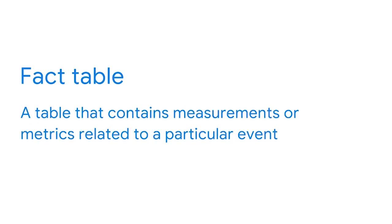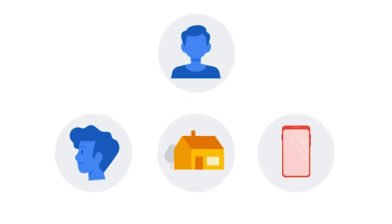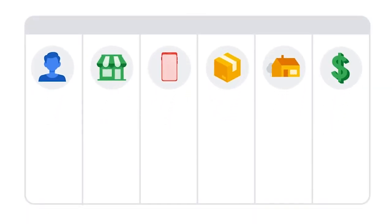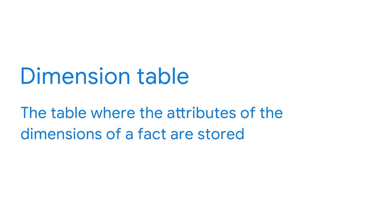The dimensional model uses facts, dimensions, and attributes to create two types of tables: fact tables and dimension tables. A fact table contains measurements or metrics related to a particular event — it's the primary table that contains the facts and their relationship with the dimensions. Each row in the fact table represents one event. The entire table could aggregate several events, such as sales in a day. A dimension table is where attributes of the dimensions of a fact are stored. These tables are joined to the appropriate fact table using the foreign key, which gives meaning and context to the facts.